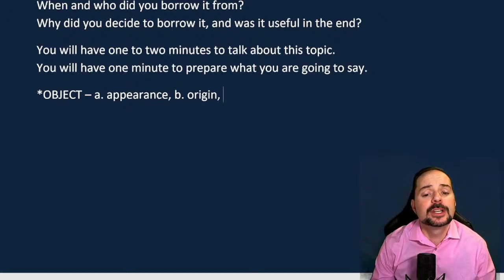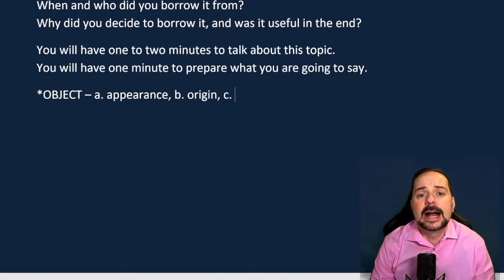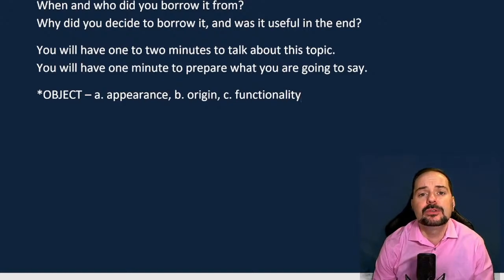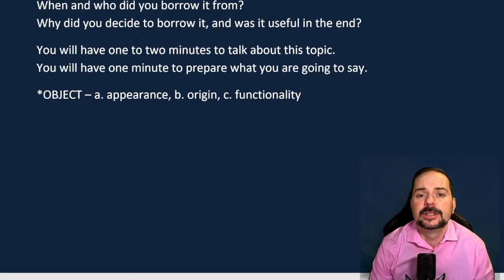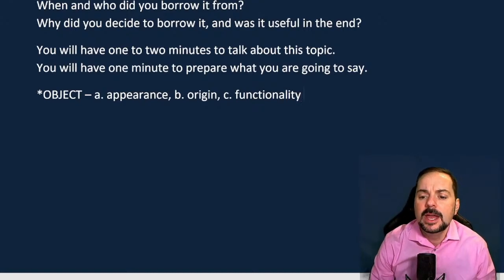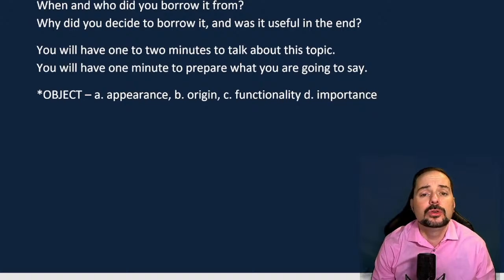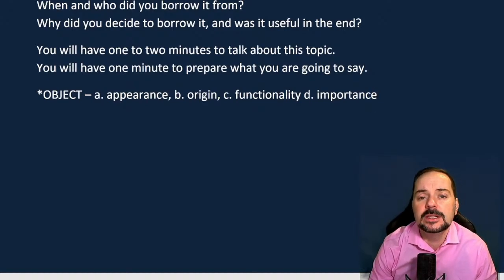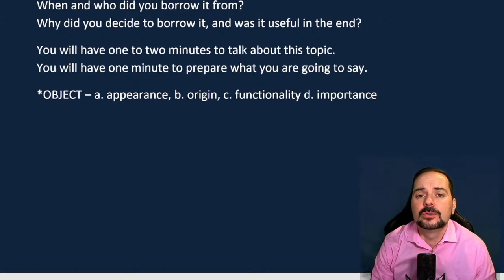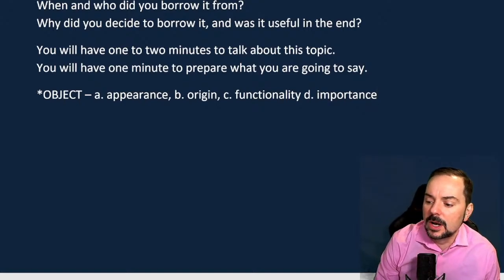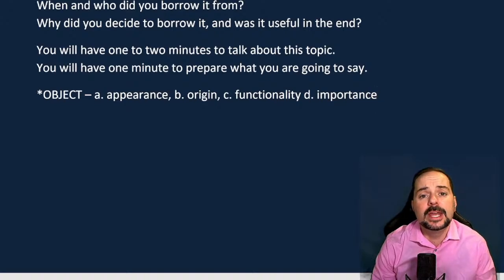Once we know where the object comes from, we're curious about how to use it — its functionality. How does it work? How do you use this object? If you borrowed a Ferrari from your friend, how do you drive it? And then D: talk about its importance to you. Why did you borrow that Ferrari? What did you use it for? Did you go for a street race, or take your date to the theater? That's what you want to include, in that order.